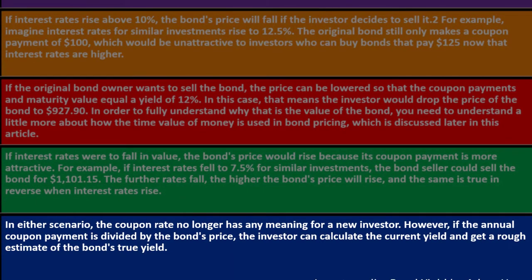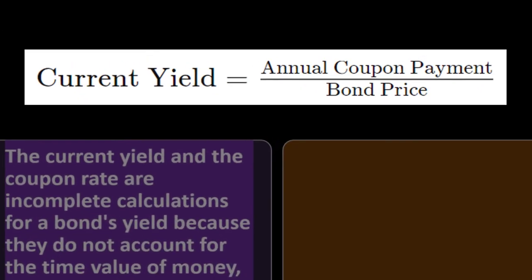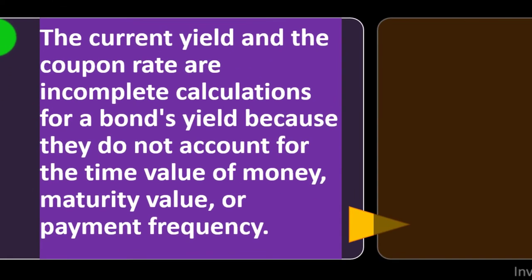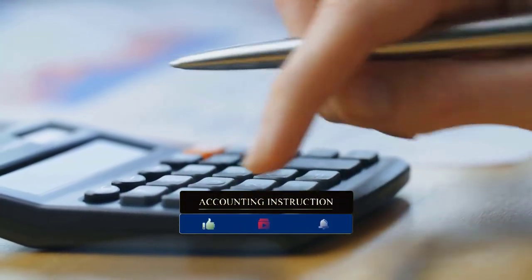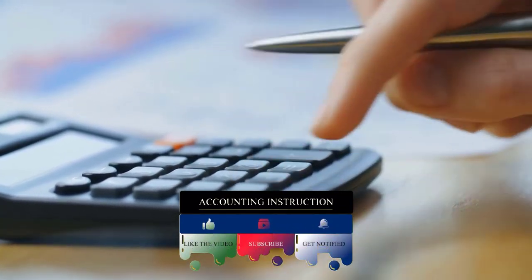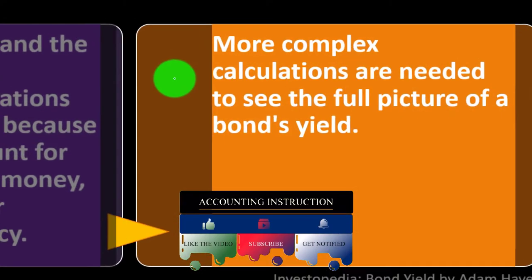In this scenario, the coupon rate no longer has any meaning for a new investor. However, if the annual coupon payment is divided by the bond's price, the investor can calculate the current yield and get a rough estimate of the bond's true value. Current yield equals annual coupon payment divided by bond price. The current yield and coupon rate are incomplete calculations because they do not account for the time value of money, maturity value, or payment frequency.